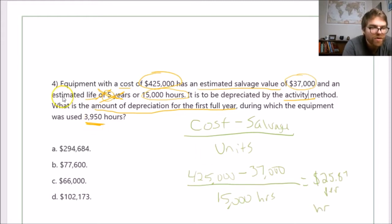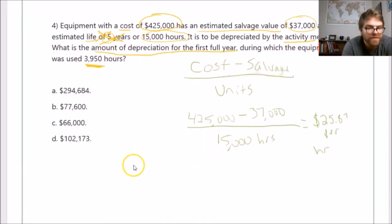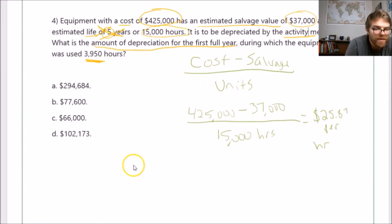It wants to know for the first full year during which the equipment was used 3,950 hours. We know that $25.87 was used for 3,950 hours, so let's get that number. For the first year, we depreciate $102,173.